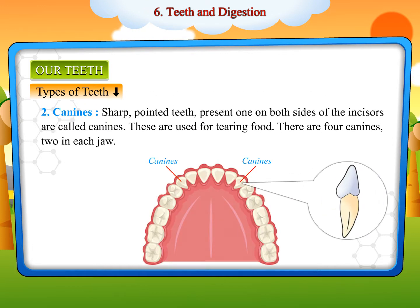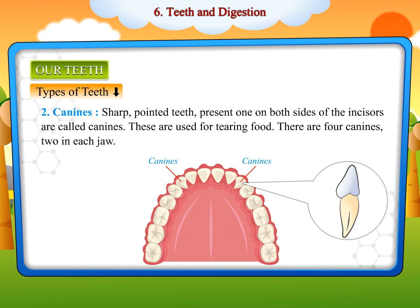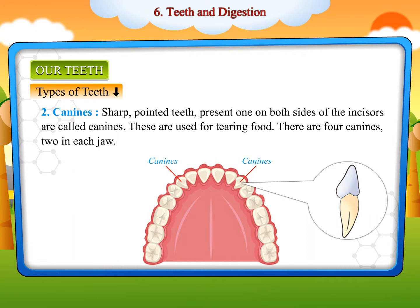Canines are sharp, pointed teeth present one on both sides of the incisors. These are used for tearing food. There are four canines, two in each jaw.